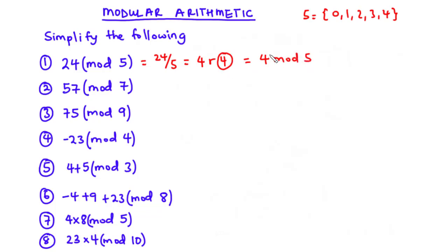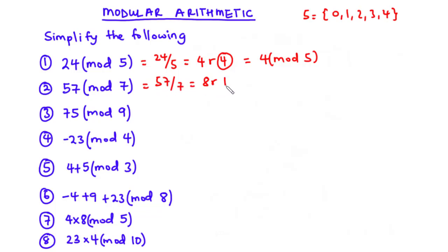Question 2: 57 modulo 7. We divide 57 by 7: 7 times 8 is 56, so we have 8 remainder 1 (since 57 minus 56 is 1). Since we are interested in the remainder, 57 mod 7 equals 1.